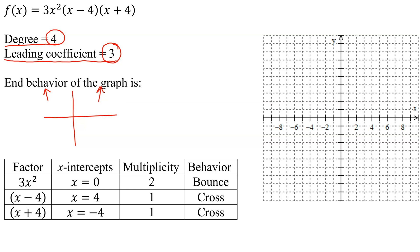So now I'm ready to graph. First thing I want to do is plot my x-intercepts. The first one is when x equals 0. The next one is when x equals 4. And the next one was x equals negative 4.